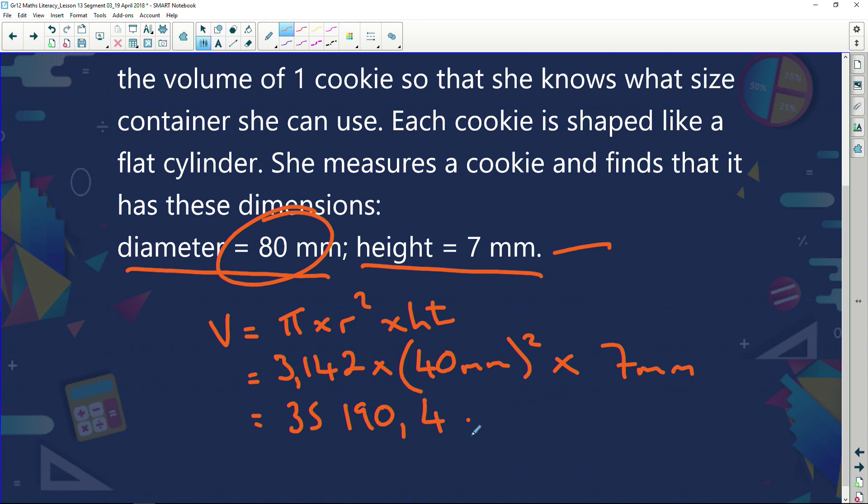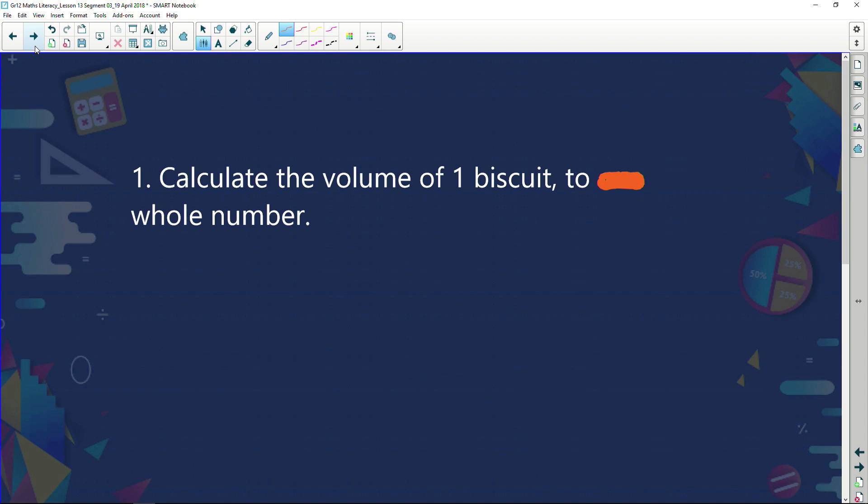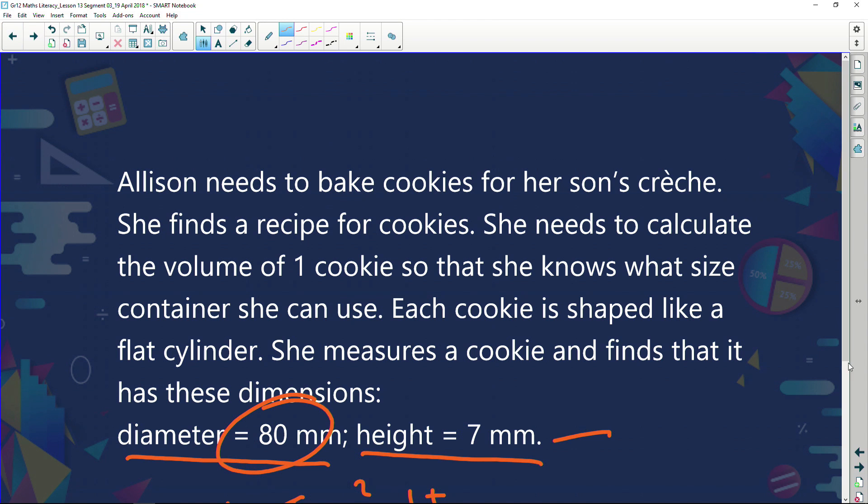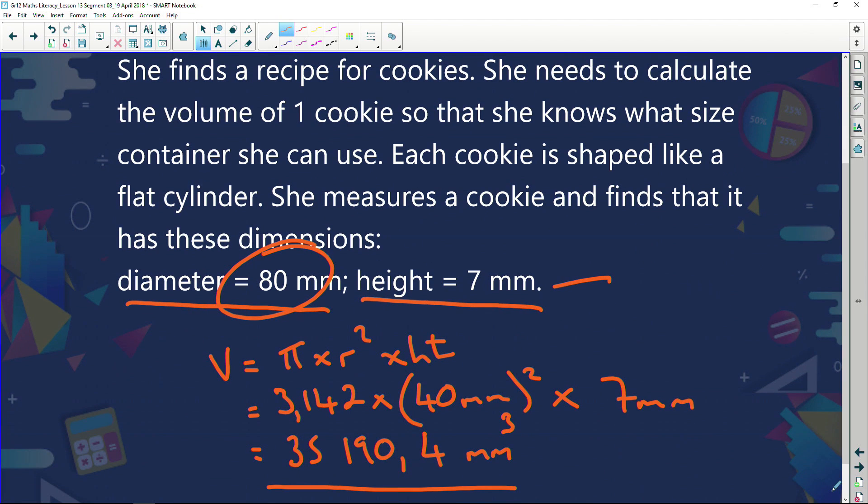35,190.4. And what's my answer as millimeters cubed, because I'm dealing in volume. Let's see what that question did ask us. It asked us to calculate the volume of the biscuit, but it says to the nearest whole number. So the nearest whole number is going to be 35,190 millimeters cubed.